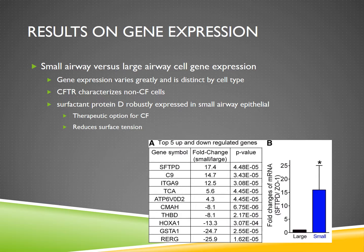For example, surfactin protein D is robustly expressed in small airway epithelial cells. As you can see in bar graph B, it shows how different the expression is. This is interesting because surfactin protein D reduces surface tension, which helps with mucociliary transport, and it's currently being investigated as a therapeutic option for cystic fibrosis.